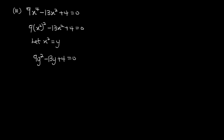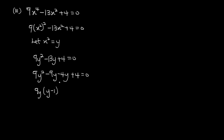We use the coefficient of y², which is 9, multiplied by the constant 4: 9 × 4 = 36. We need two numbers that multiply to 36 and add to -13: negative 9 and negative 4 work, since (-9) × (-4) = 36 and (-9) + (-4) = -13. So we rewrite as 9y² - 9y - 4y + 4 = 0, then factor as 9y(y - 1) - 4(y - 1) = 0, giving (9y - 4)(y - 1) = 0.